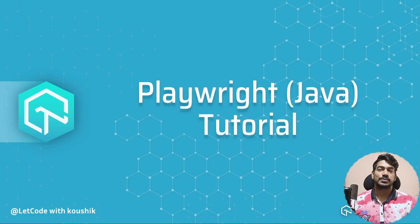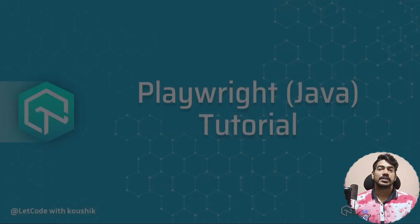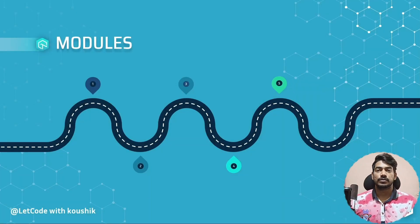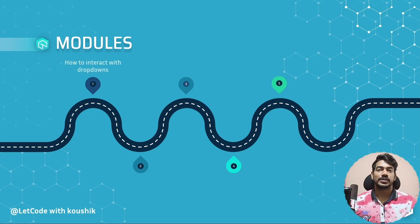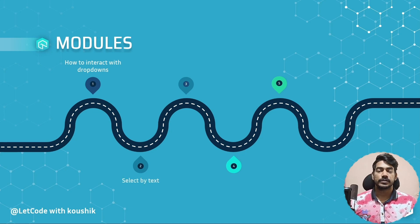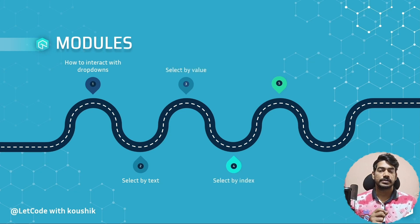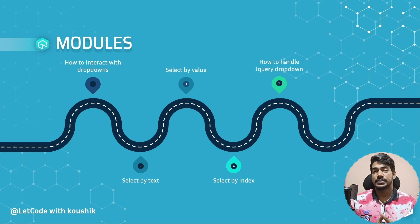Hello guys, welcome back to Learn by Text. In our previous video we learned how to interact with different types of input fields. In this video we are going to learn how to interact with different types of dropdowns — selecting by text or label, by value, by index, and also how to handle the jQuery dropdown.